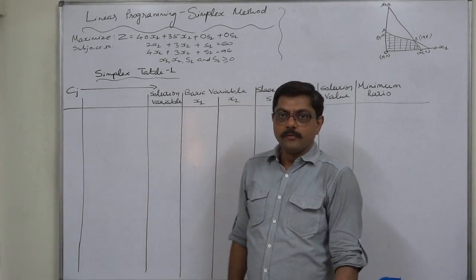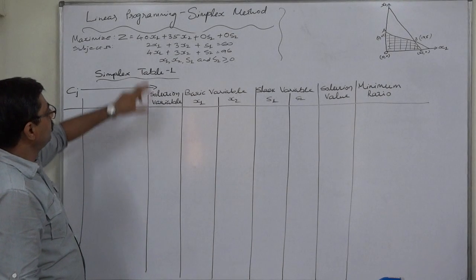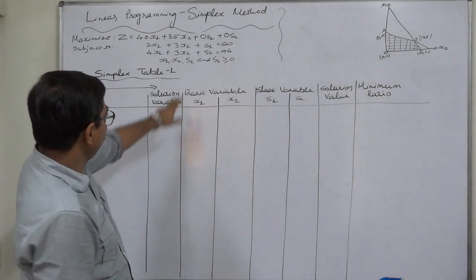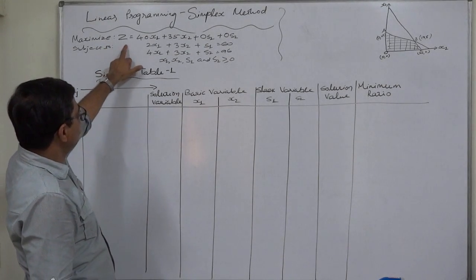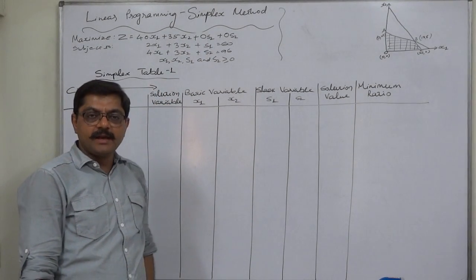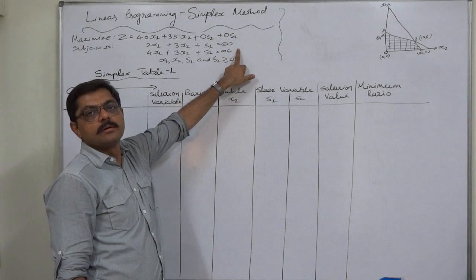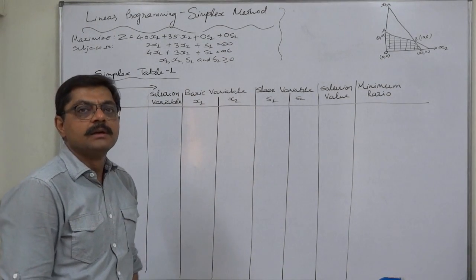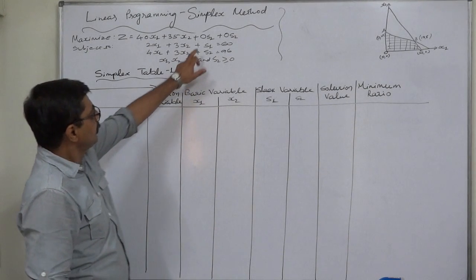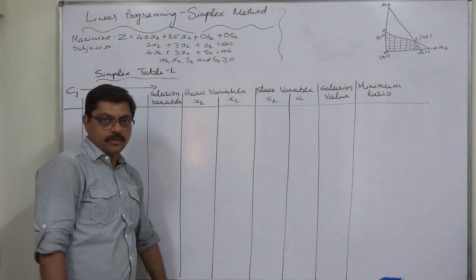Hello friends. Now we are going to learn how to prepare the first simplex table from a linear programming problem which we have already converted into equalities by introducing slack variables. We maximize Z equals 40X1 plus 35X2 plus 0S1 plus 0S2. Since the slack variables show the unused capacity or resources, there will be no earning from them because a slack variable is not a sellable item, so its contribution margin should be taken as 0.